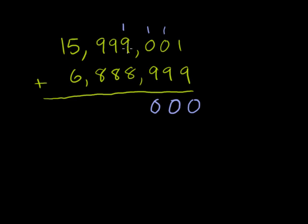Now 1 plus 9 is 10, plus 8. 10 plus 8 is 18. Write the 8, carry the 1. 1 plus 9 is 10, plus 8 is 18. Write the 8, carry the 1. 1 plus 9 is 10, plus 8 is 18. Write the 8, carry the 1. Now we're in the millions place. 1 million plus 5 million is 6 million, plus 6 million is 12 million. Write the 2 million, and then carry the 1, because 12 million is 2 million plus 10 million.